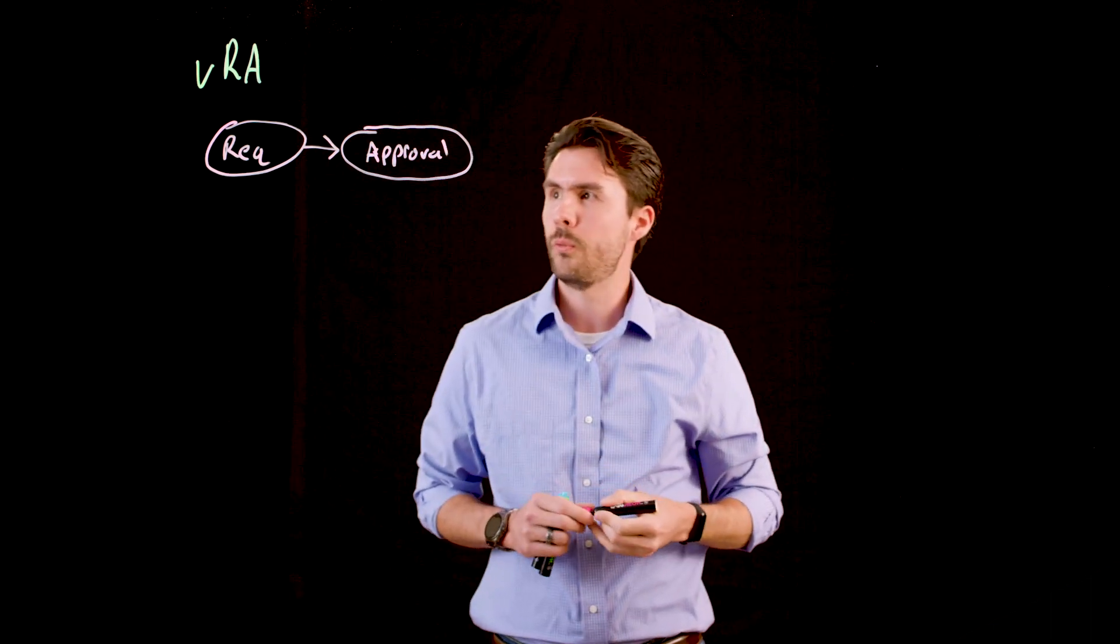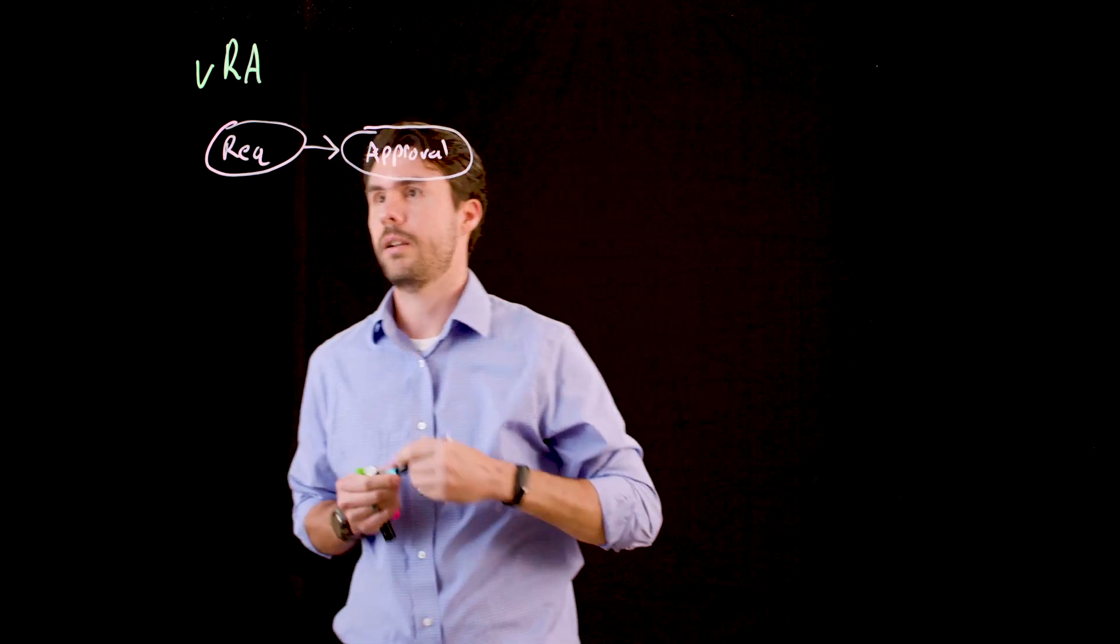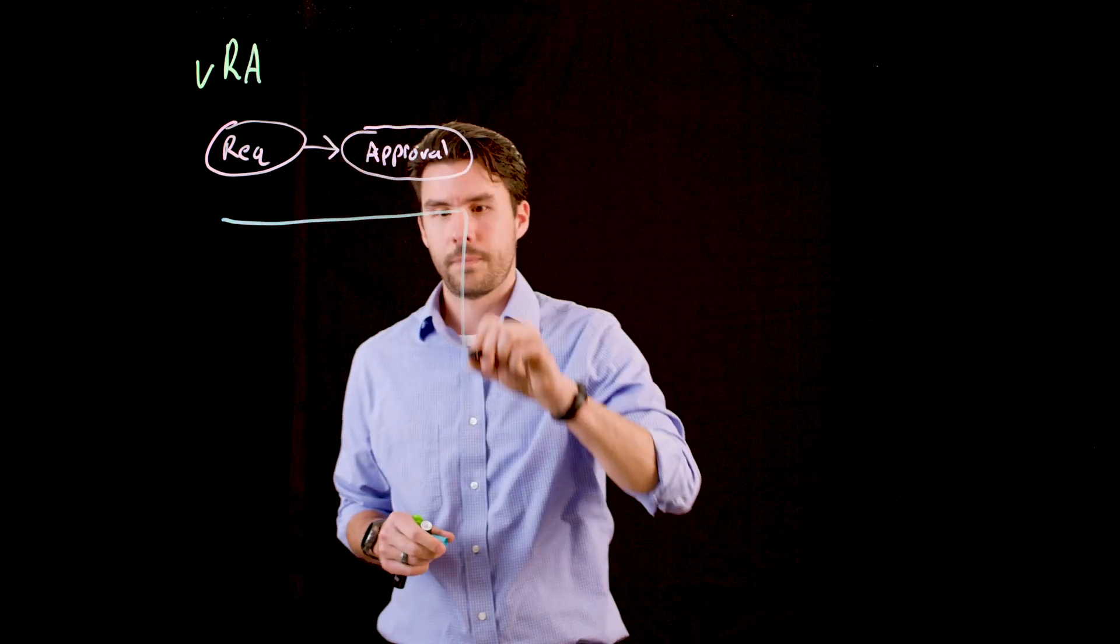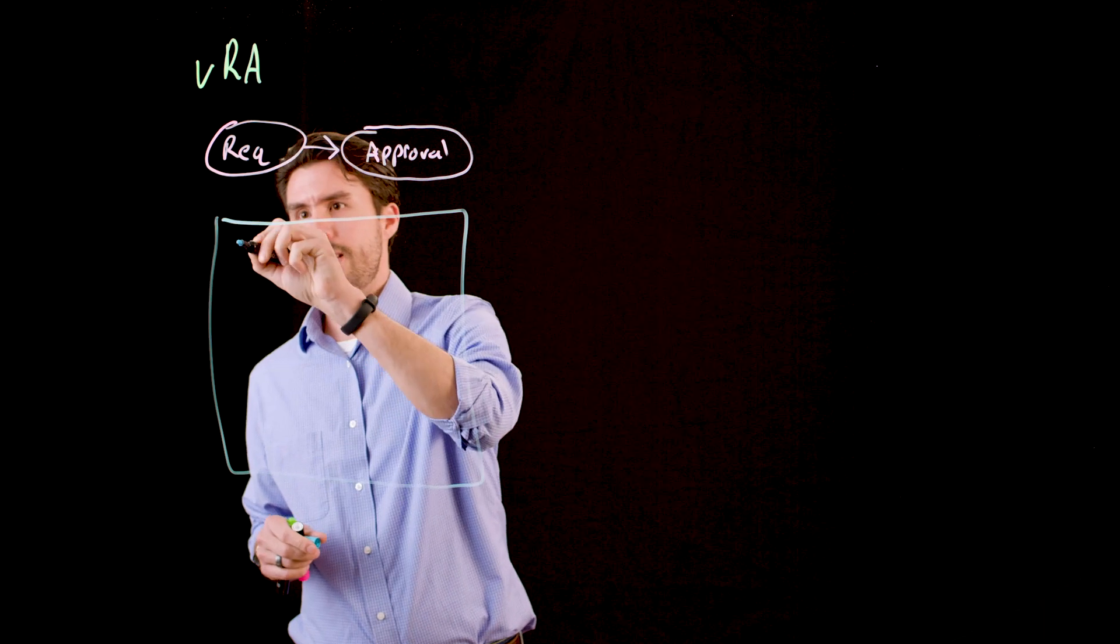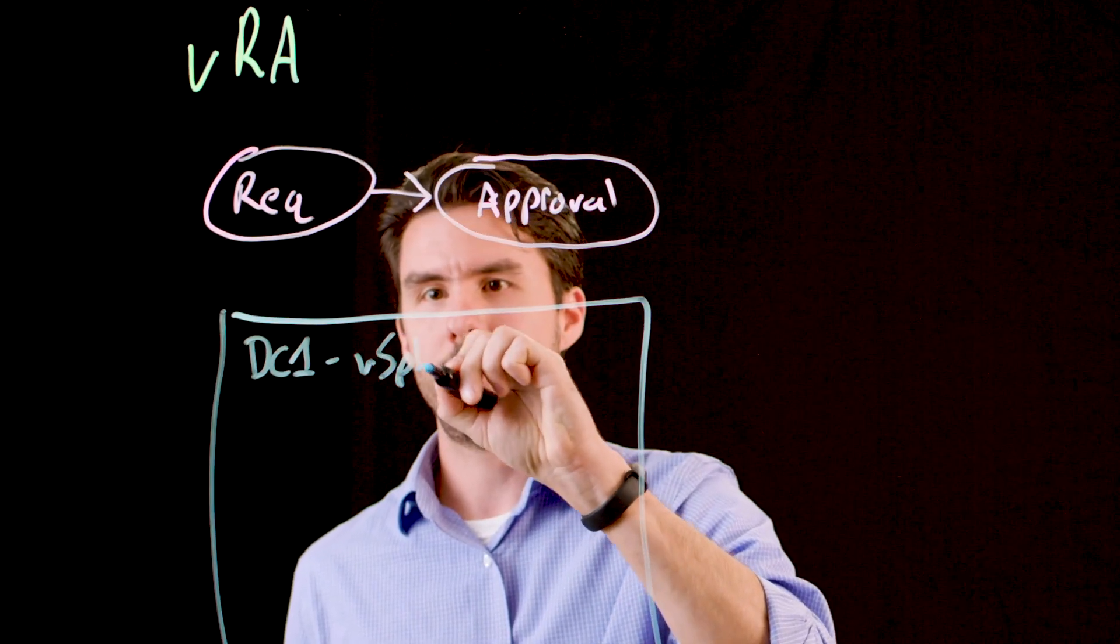Once we have a request and it's been approved, we need to build a VM, and to do so, we need a data center. So, let's build us a data center. We'll call this guy DC1 and we'll note that this is going to be a vSphere environment.